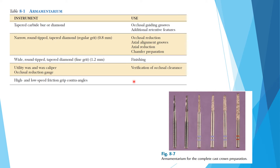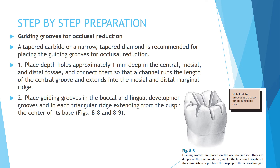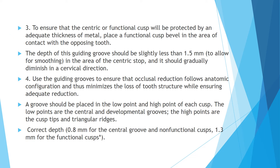A fine-grit diamond (yellow band) is used for finishing. Utility wax and calipers are used if required for occlusal clearance check, along with high- or low-speed contra-angle handpieces. To ensure the centric or functional cusp is protected by adequate metal thickness, place the functional cusp bevel at the area of contact with the opposing teeth.